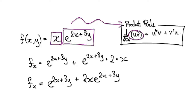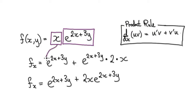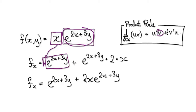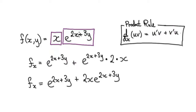The product rule is: differentiate the first, leave the second alone. So differentiate the first, which will be 1, and leave the second alone. Then plus, and then differentiate the second and leave the first alone.